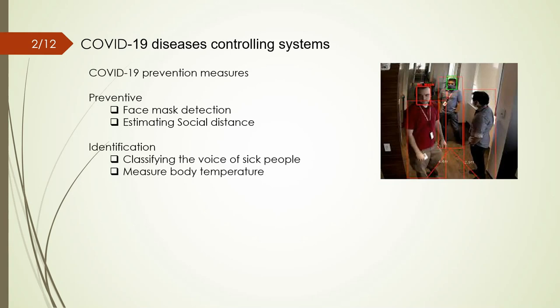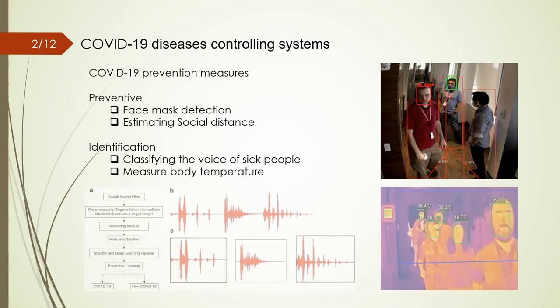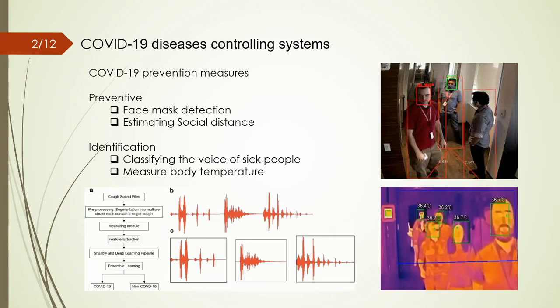The identification of sick people can also help prevent its spread. So systems have been developed to classify patients. For example, some of these systems classify sick people by voice processing and some others identify them based on their body temperature.